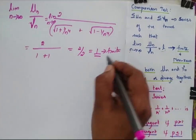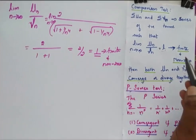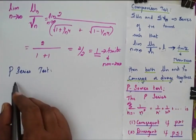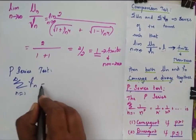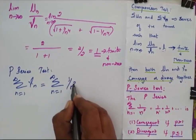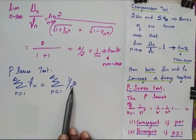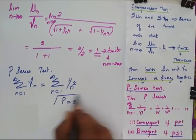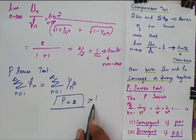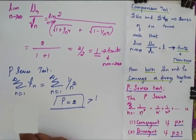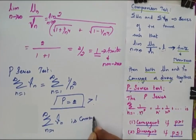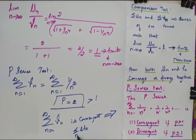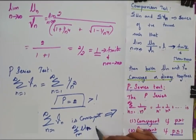The limit is finite and non-zero, so I check convergence or divergence using the p-series test. My summation from n equals 1 to infinity of vn equals summation of 1 by n squared. Comparing with the p-series, my p is 2, which is greater than 1, so summation vn from n equals 1 to infinity is convergent. Since un and vn converge or diverge together, summation un from n equals 1 to infinity is also convergent.